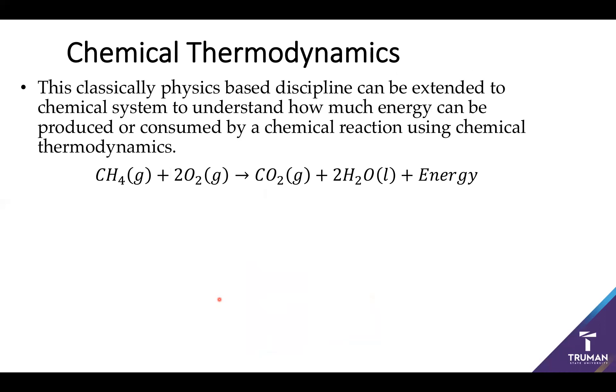We're going to be specifically focusing on chemical thermodynamics. This is the amount of energy consumed or produced by a chemical reaction. A great example is the combustion of natural gas or methane. You take methane, combine it with oxygen, and produce CO2 and water. However, one of the big reasons why we do this reaction is you also produce a whole bunch of energy, because oxygen and methane are relatively unstable. CO2 and water are very stable molecules. As you go from unstable to stable, you produce a lot of energy.